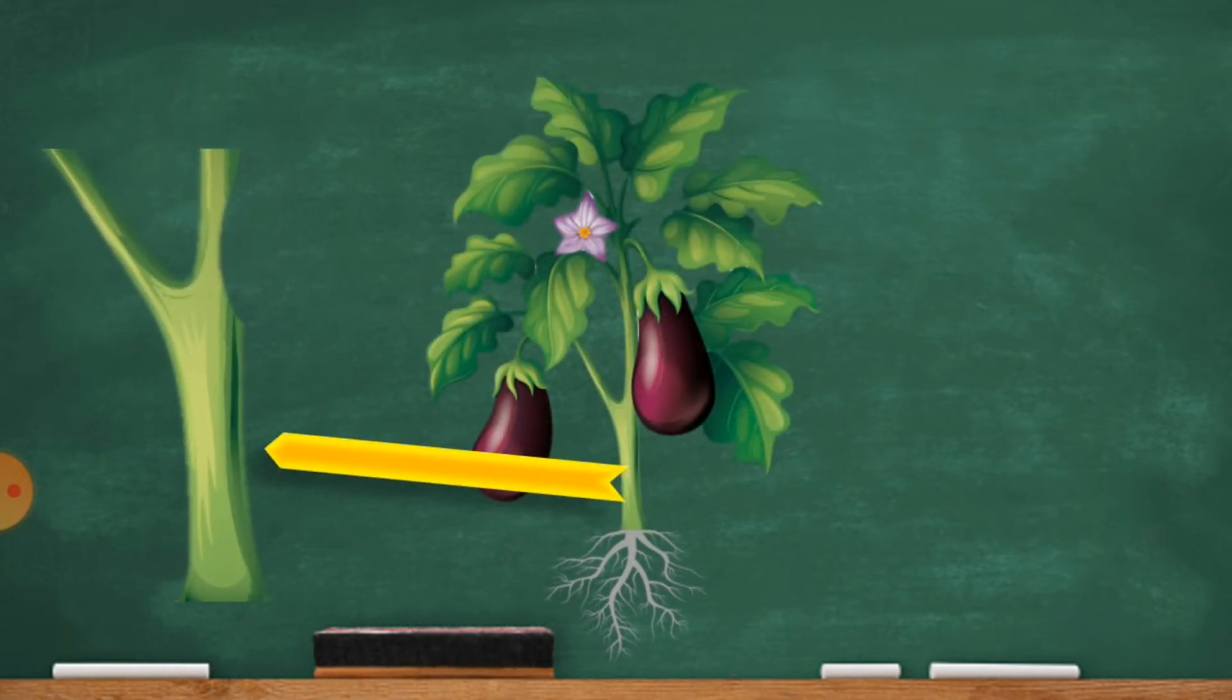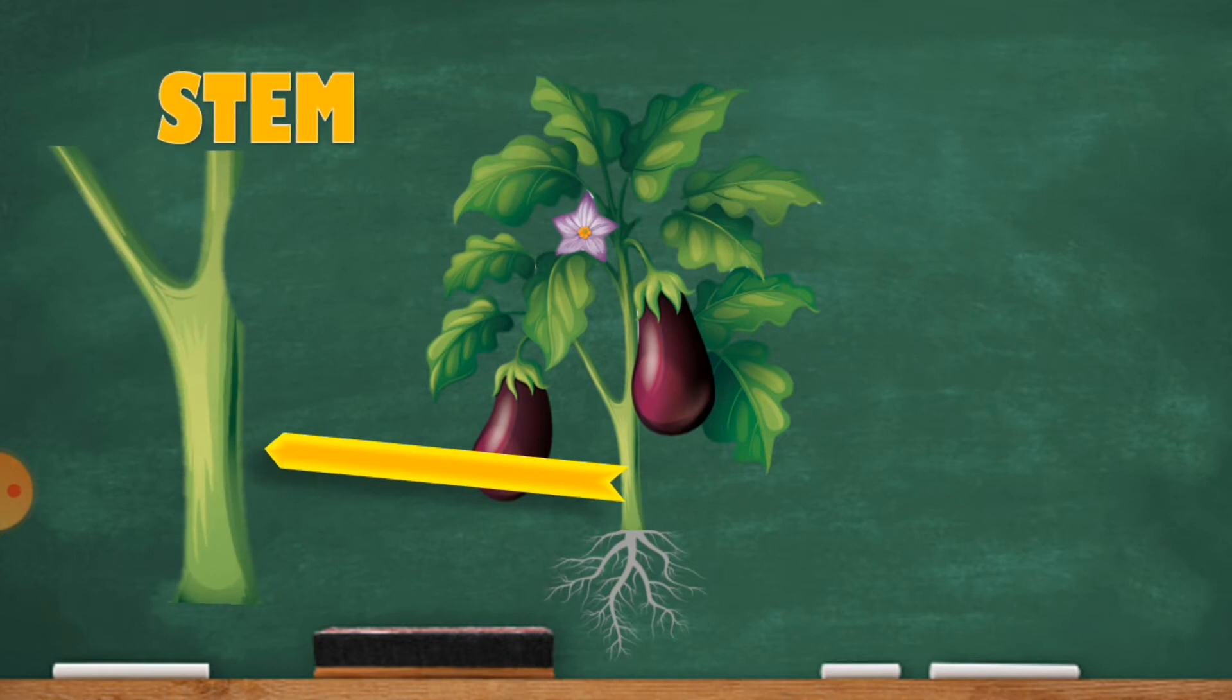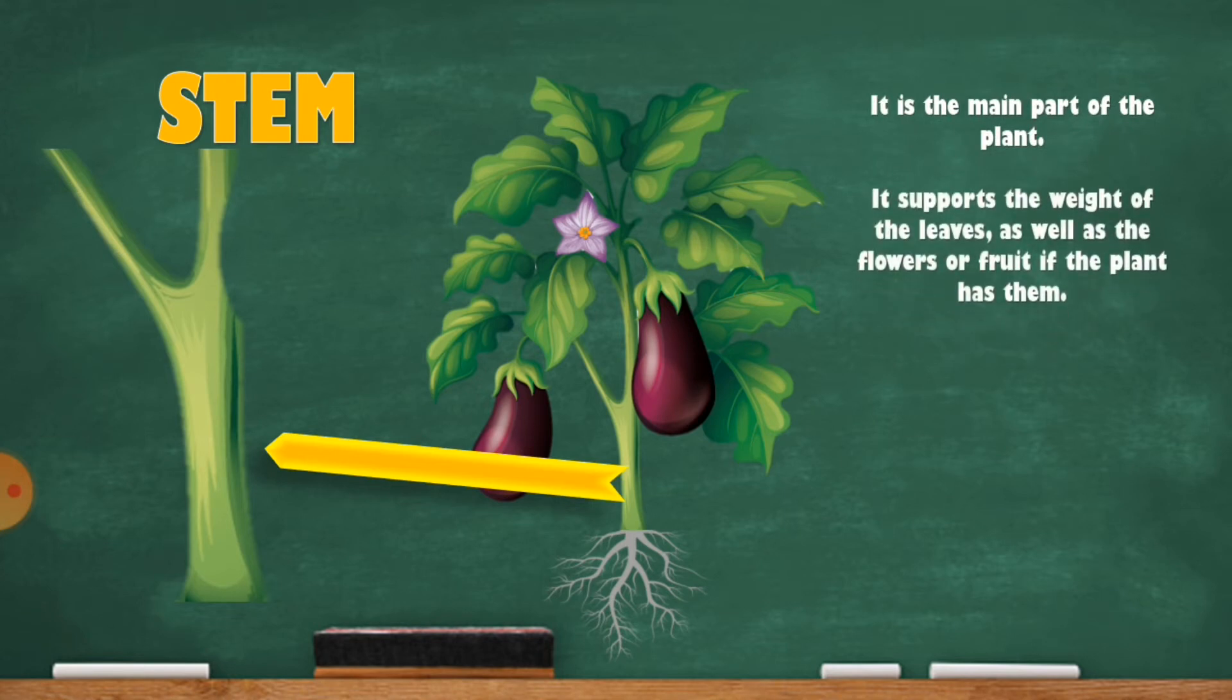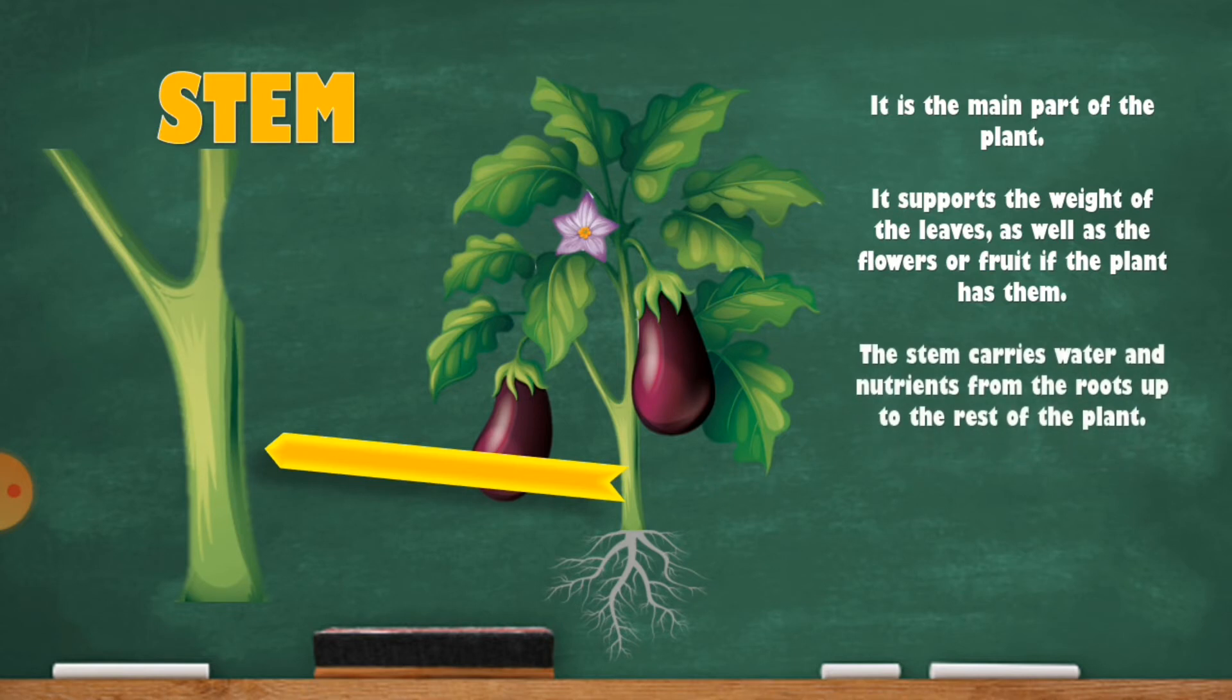Now we will talk about the second part of the plant: stem. It is the main part of the plant. It supports the weight of the leaves, as well as the flowers or fruits if the plant has them. The stem carries water and nutrients from the roots up to the rest of the plant.